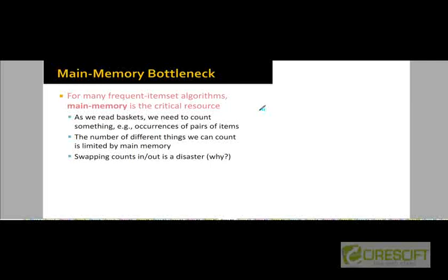So as we make a pass through the transaction file, we will be noting how many times each item has occurred so far, how many pairs of items have appeared, how many triples of items have appeared, and so on. The algorithm is going to do multiple passes through this file.